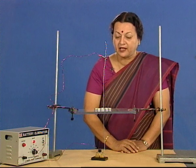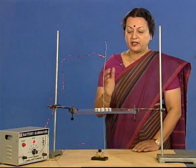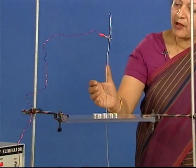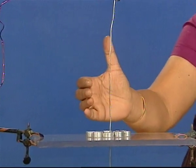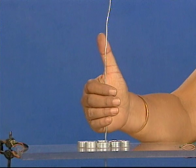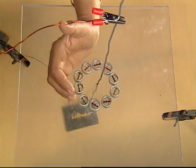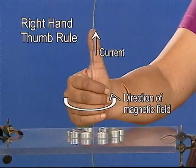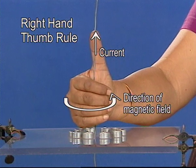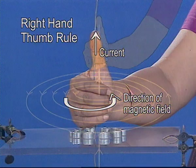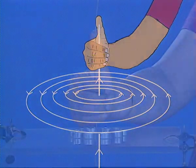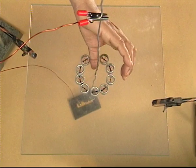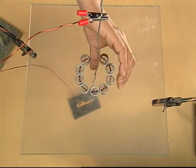There is a very convenient way to remember this. Imagine wrapping the fingers of your right hand around the wire in such a way that the thumb points in the direction of the current. Then the fingers wrapped around the wire will point in the direction of the field lines. This rule is called the right-hand thumb rule.